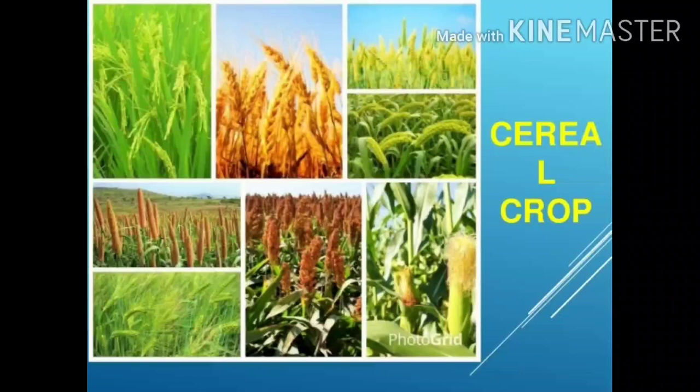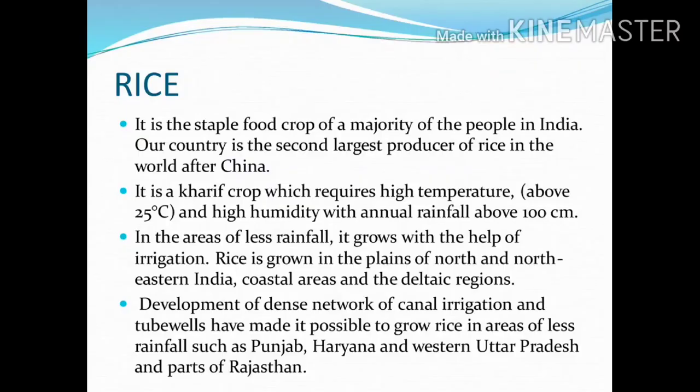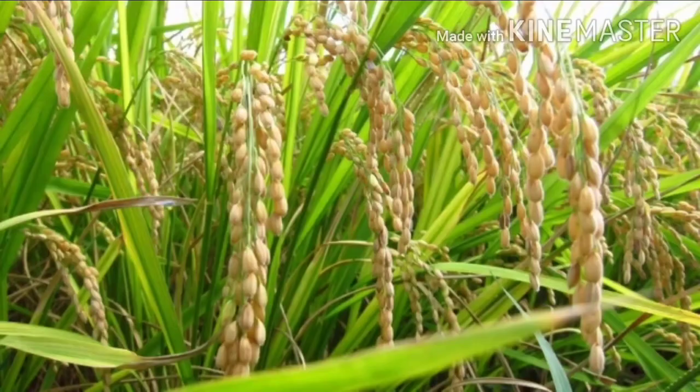Let us start with rice. Rice is a staple food crop. Our country is the second largest producer of rice in the world after China. It is a Kharif crop which requires high temperature of about 25 degree Celsius and high humidity with annual rainfall above 100 cm. It is grown in the plains of north and north-eastern India, coastal areas, and deltaic regions.